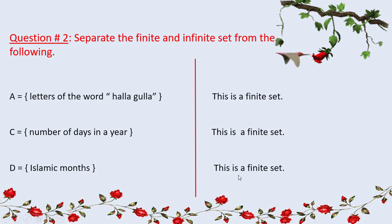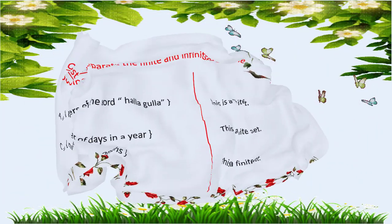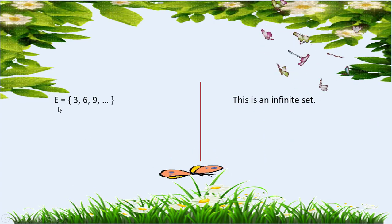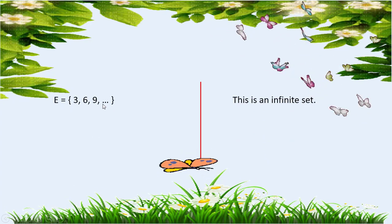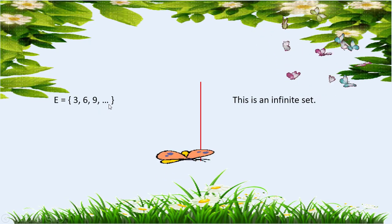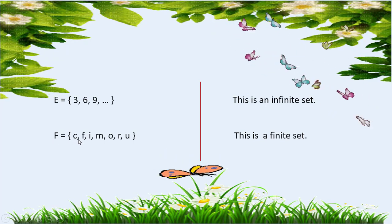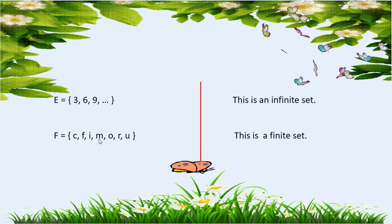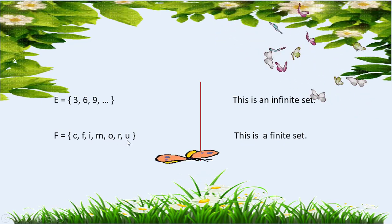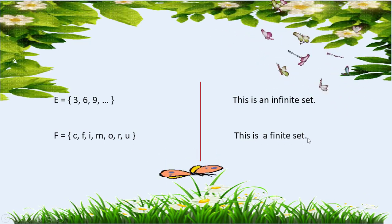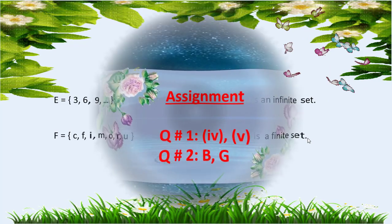E is the set of multiples of three — this is an infinite set. F is the set of letters C, F, I, M, O, R, U — we can easily count these elements, so this is a finite set.